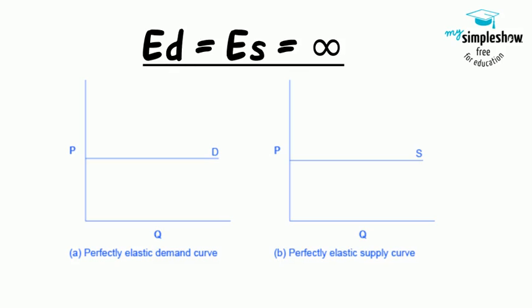While perfectly elastic supply curves are for the most part unrealistic, goods with readily available inputs and whose production can easily expand will feature highly elastic supply curves. The horizontal lines show that an infinite quantity will be demanded or supplied at a specific price, illustrating perfectly or infinitely elastic demand and supply curves. The quantity supplied or demanded is extremely responsive to price changes, moving from zero for prices close to P to infinite when prices reach P.